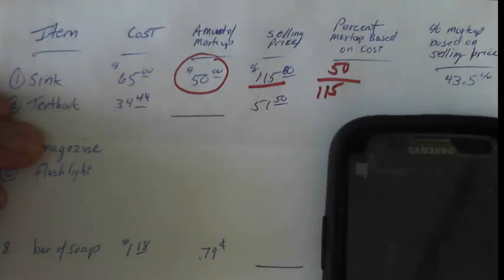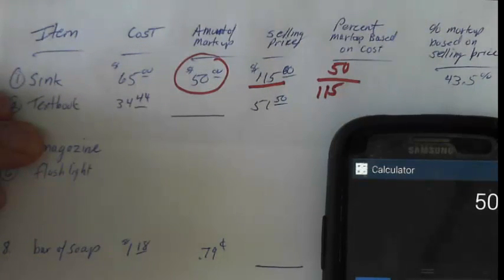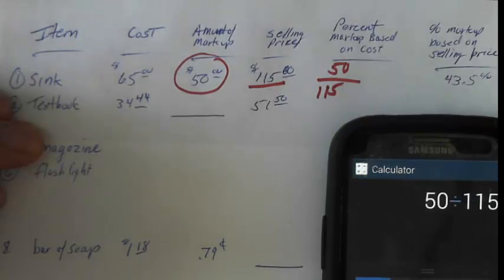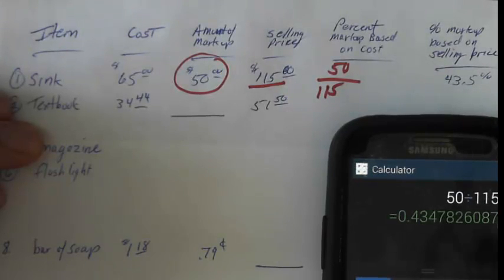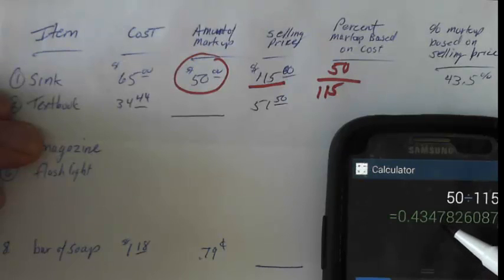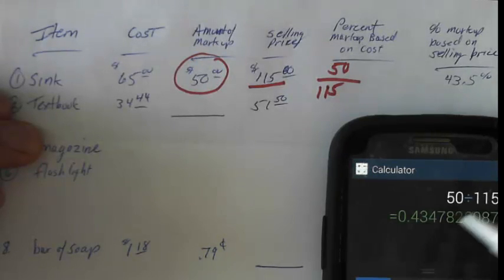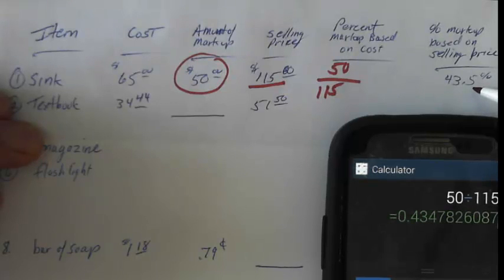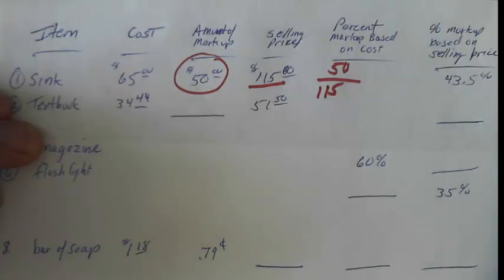It's just calculator work: 50 divided by 115 equals 43.34, and rounding that and moving the decimal over 2 gives us 43.5%. That's how they're getting these numbers.